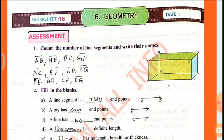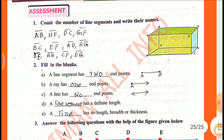Worksheet No. 16, assessment. Count the number of line segments and write their names. The line segments are: AB, HE, DC, GF, BC, EF, AD, HG, BE, AH, CF, DG.